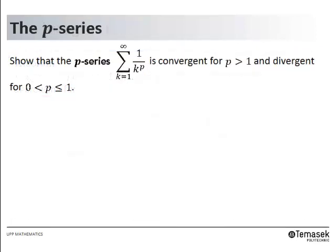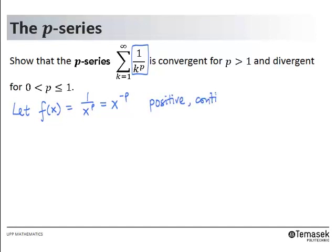Let us now use the integral test to show the convergence of the p-series. We choose the function f(x) equals 1 over x to the power p, which we can write as x to the power negative p. This function is obviously positive, continuous, and decreasing for p greater than 0.